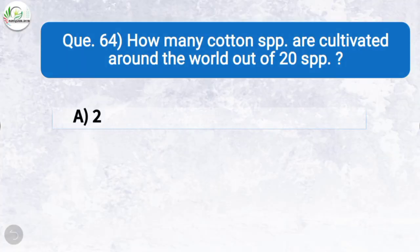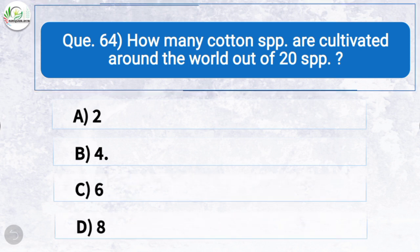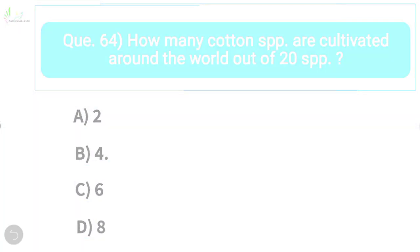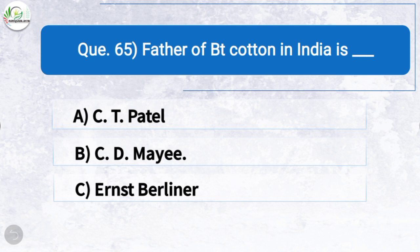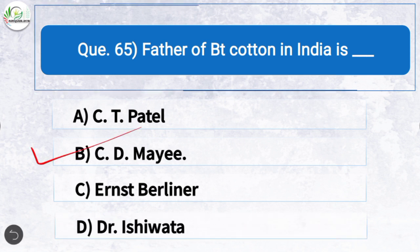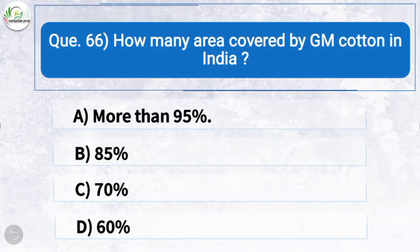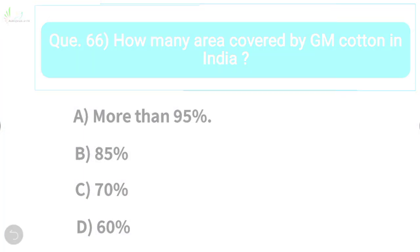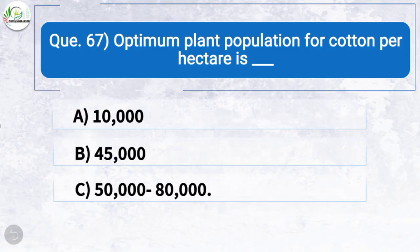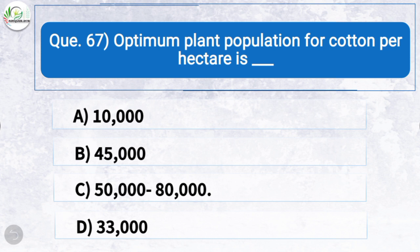Question sixty-four: How many cotton species are cultivated around the world out of 20 species? The correct answer is option B: 4. Question sixty-five: Father of BT cotton in India is — the correct answer is option B: C.D. Mayee. Question sixty-six: How much percentage of area is covered by genetically modified cotton in India? The correct answer is option A: more than 95 percent. Question sixty-seven: Optimum plant population for cotton per hectare is — the correct answer is option C: 50,000 to 80,000.